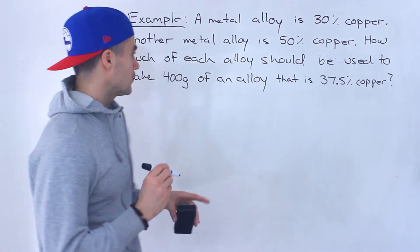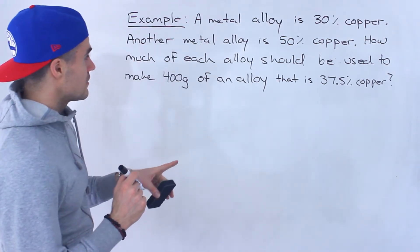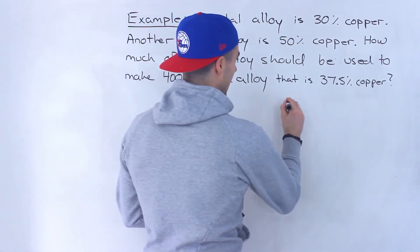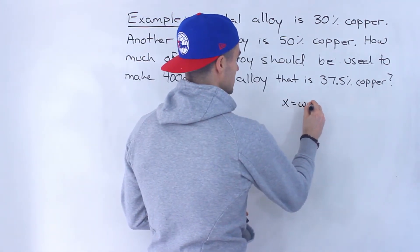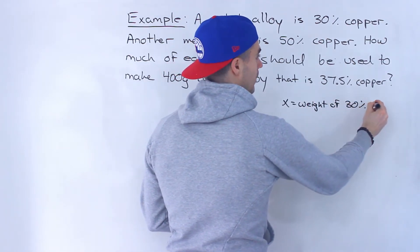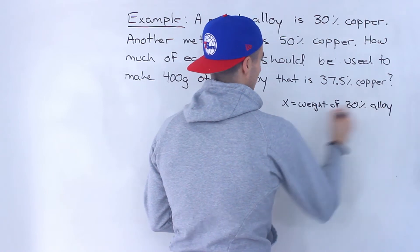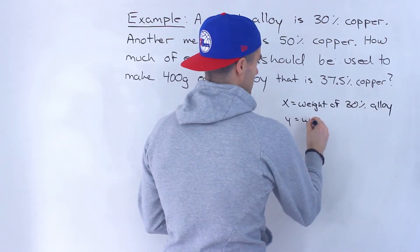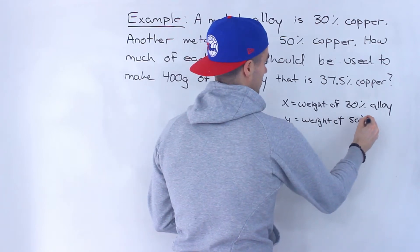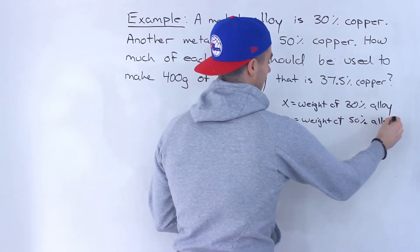So what we're trying to find is the weight in grams of each of these alloys. So I'm gonna let x equal the weight of the 30% copper alloy and then I'm gonna let y equal the weight of the 50% alloy.